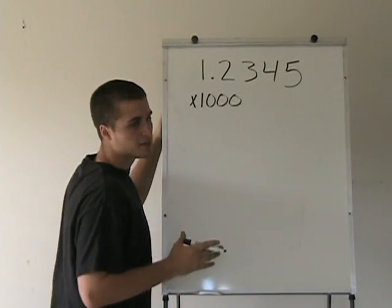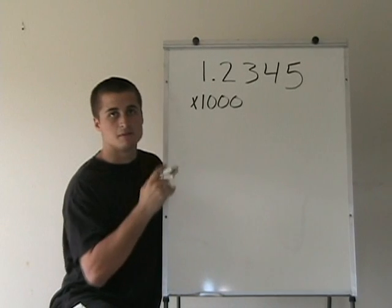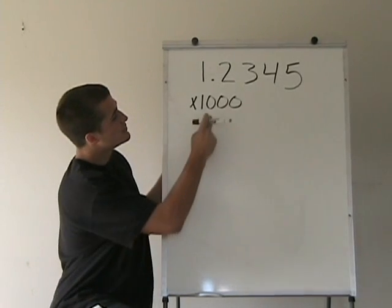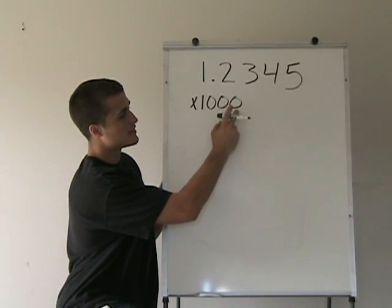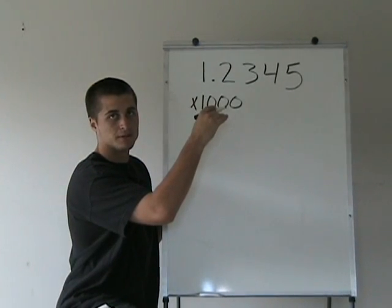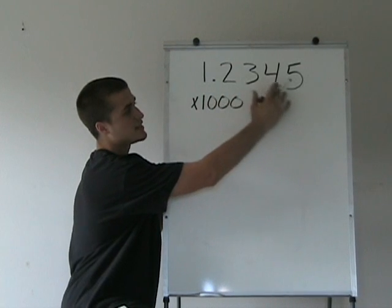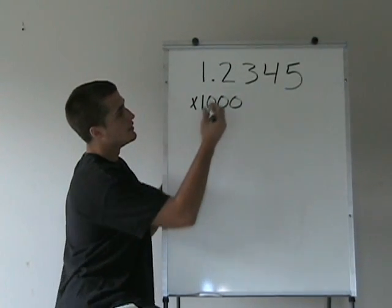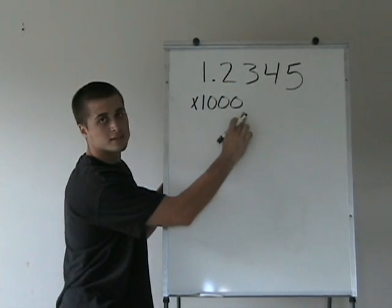It makes sense intuitively that if you're multiplying, this number is going to be bigger. So what you do is you count the number of zeros in a thousand, and that's how many places you move the decimal point over. When we're multiplying this decimal by a thousand, there's three zeros in a thousand.